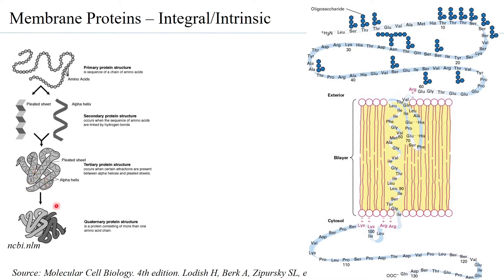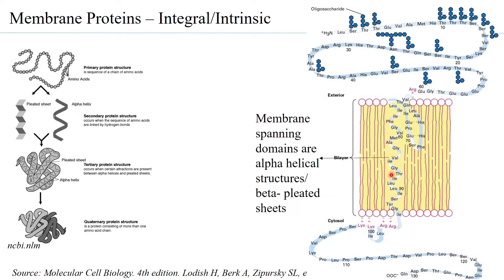Some proteins are present in quaternary structures, where two or more polypeptides come together to form a complete complex. Proper folding is necessary for a protein to be functional, including membrane proteins. What is shown here is a single-pass transmembrane protein — it traverses the bilipid layer only once, with a single membrane-spanning domain. These membrane-spanning domains are generally alpha helices or beta pleated sheets.